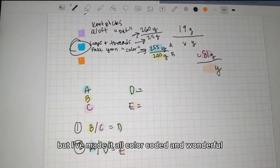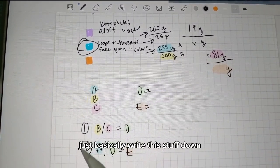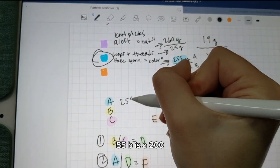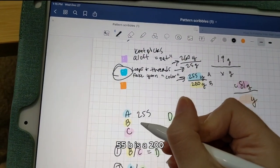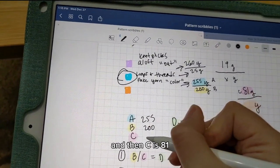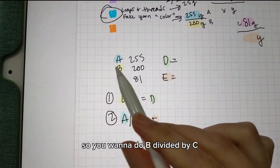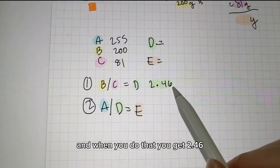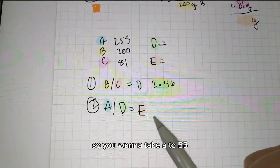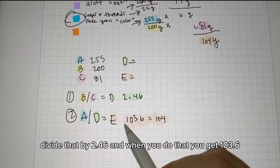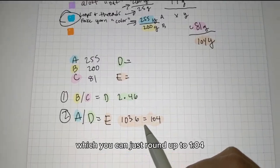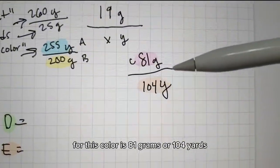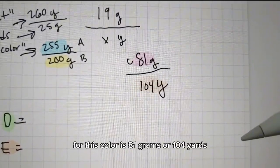Let's do another example — I've made it all color-coded. Write your info down and transfer it: A is 255, B is 200, and C is 81. Do B divided by C — you get 2.46. Then take A (255) divided by 2.46 and you get 103.6, which rounds up to 104. So the final yarn amount for this color is 81 grams or 104 yards.